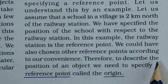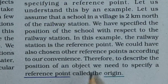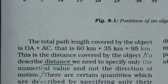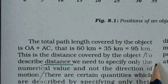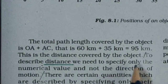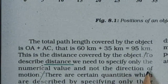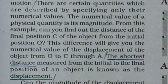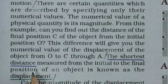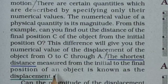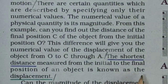To describe the position of an object, we need to specify a reference point called the origin. To describe distance, we need to specify only the numerical value and note the direction of motion. The shortest distance measured from the initial to the final position of an object is known as the displacement.